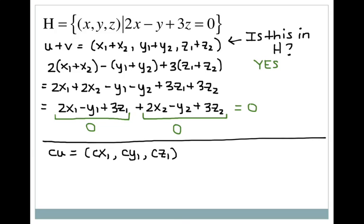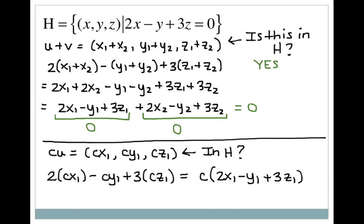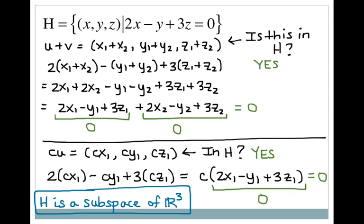Now checking scalar multiplication: multiply u by scalar c to get (cx1, cy1, cz1). Does that meet the condition of H? Plugging in: 2(cx1) minus cy1 plus 3(cz1). Factoring out c, I get c times the condition that u already meets, which equals 0. So yes, scalar multiplication is in H. It met all three conditions, so H is a subspace of R3.